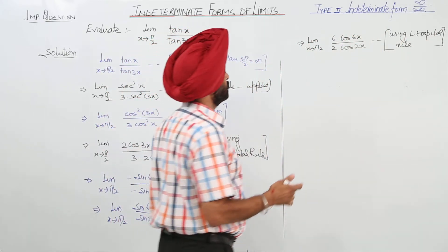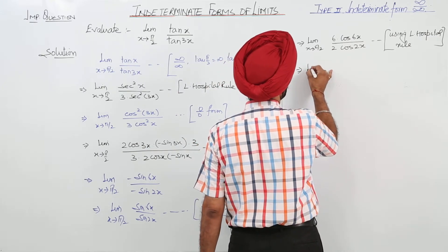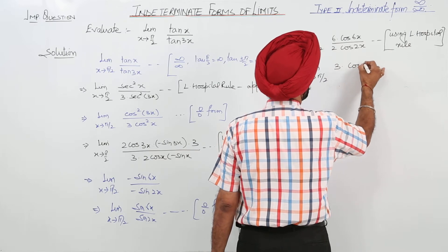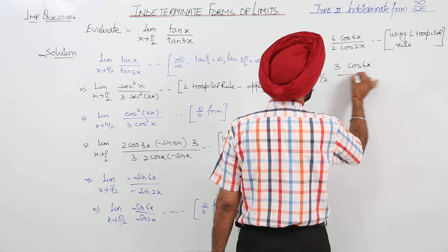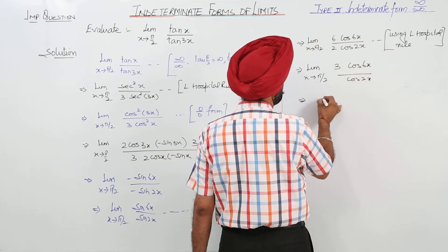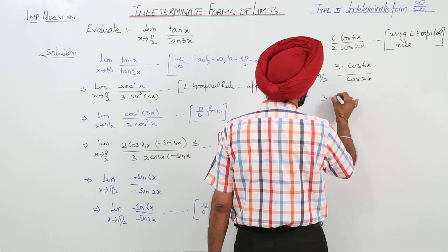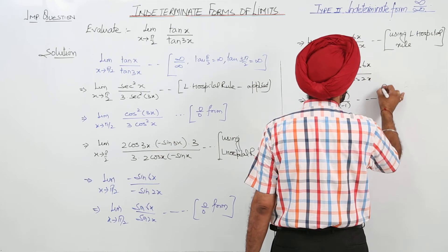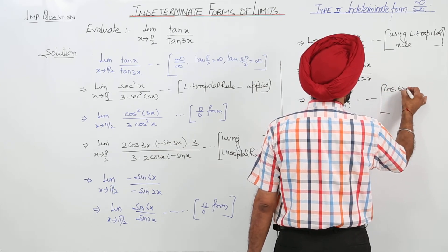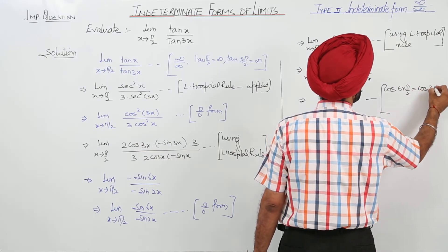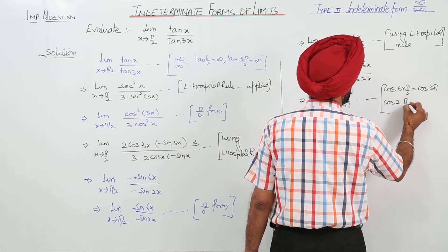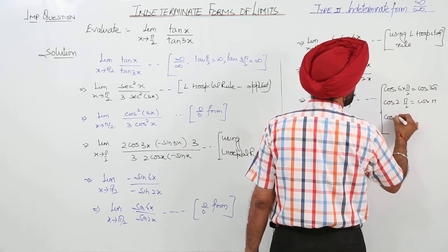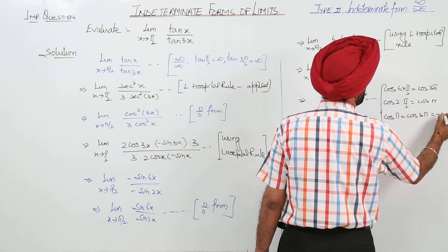Now we can get the direct value. Cos(6×π/2) equals cos(3π). 2 with π/2 equals cos(π). And cos(π) equals cos(3π) is negative 1.